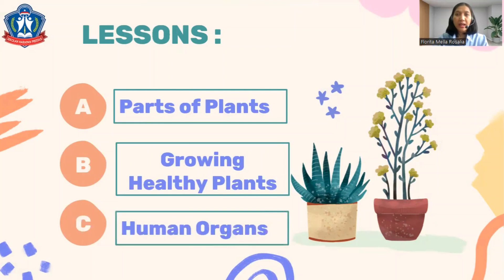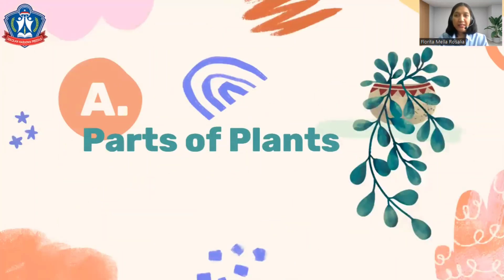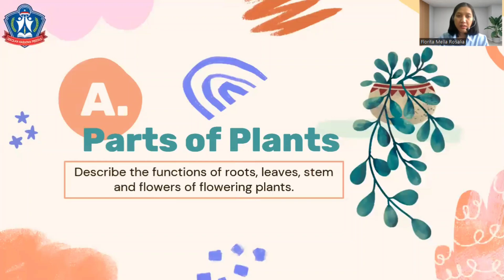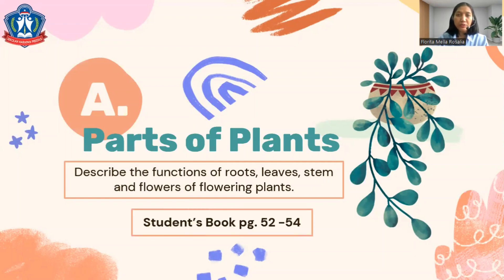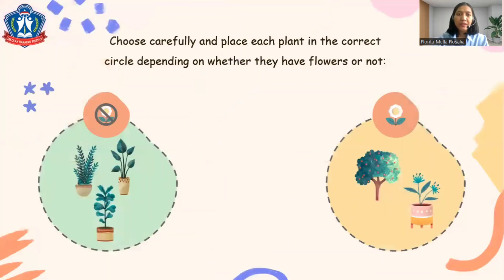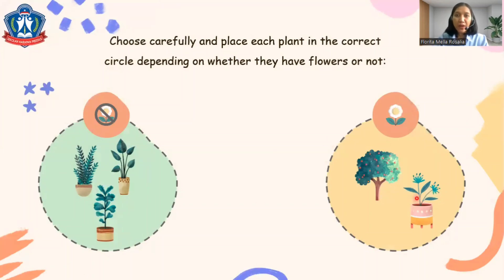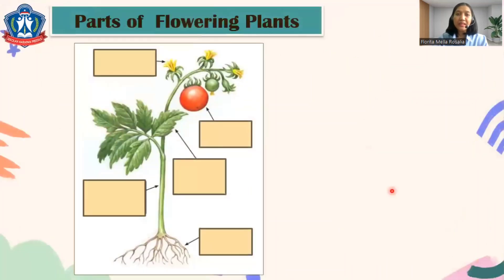Let's see one by one. Parts of plants — in this lesson you are going to describe the function of roots, leaves, stem, and flowers of flowering plants. You can open the student's book page 52 until 54. Here I have two different types of plants: the first one, these plants don't have any flowers, while this one, the plants have flowers. So here are non-flowering plants and here are flowering plants.